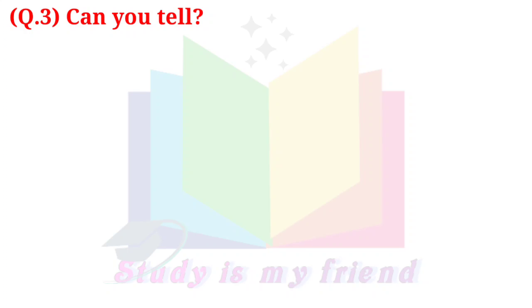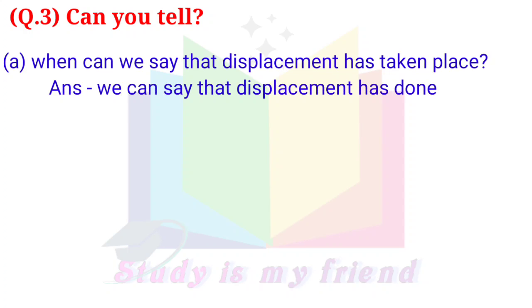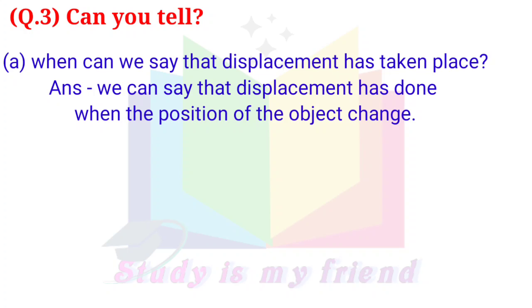Question 3: Can you tell? A. When can we say that displacement has taken place? Answer: We can say that displacement has taken place when the position of the object changes.